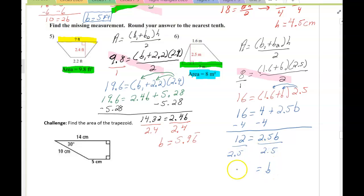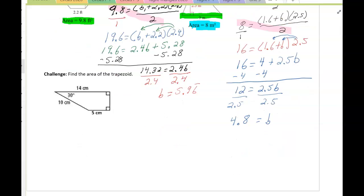So the learning target so far has been to solve for the height or the base, and the third question here is a challenge. Let's take a look at the challenge. For the challenge, we have a 30 degree angle. We know the one base is 14 and the other base is 5.